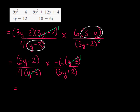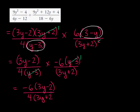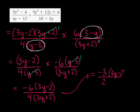I get negative 6 times 3y minus 2 over 4 times 3y plus 2, which is equal to — I can simplify this — negative 6 over 4 is equal to negative 3 over 2. And I've got the 3y minus 2 over 3y plus 2.